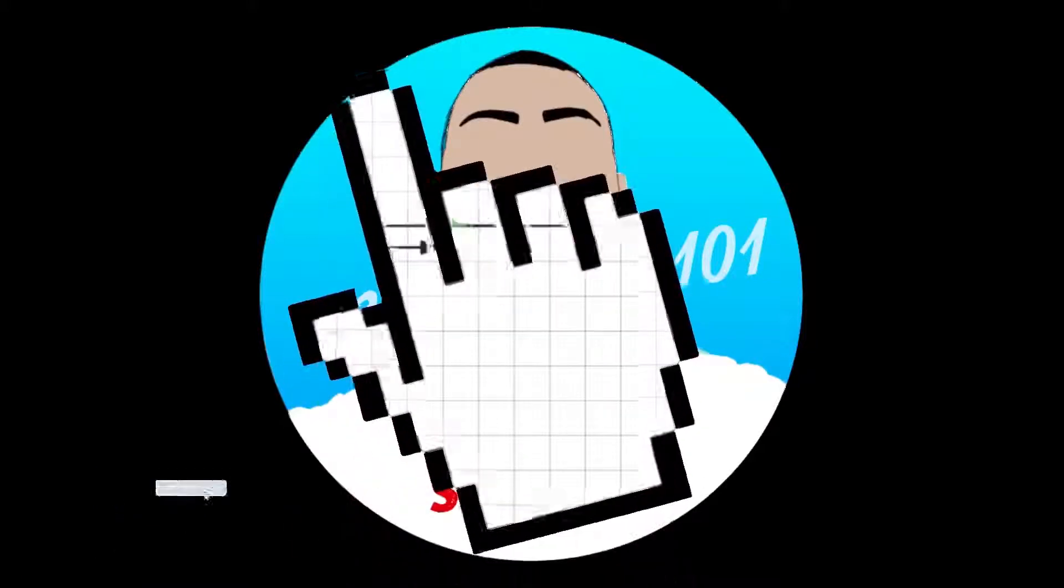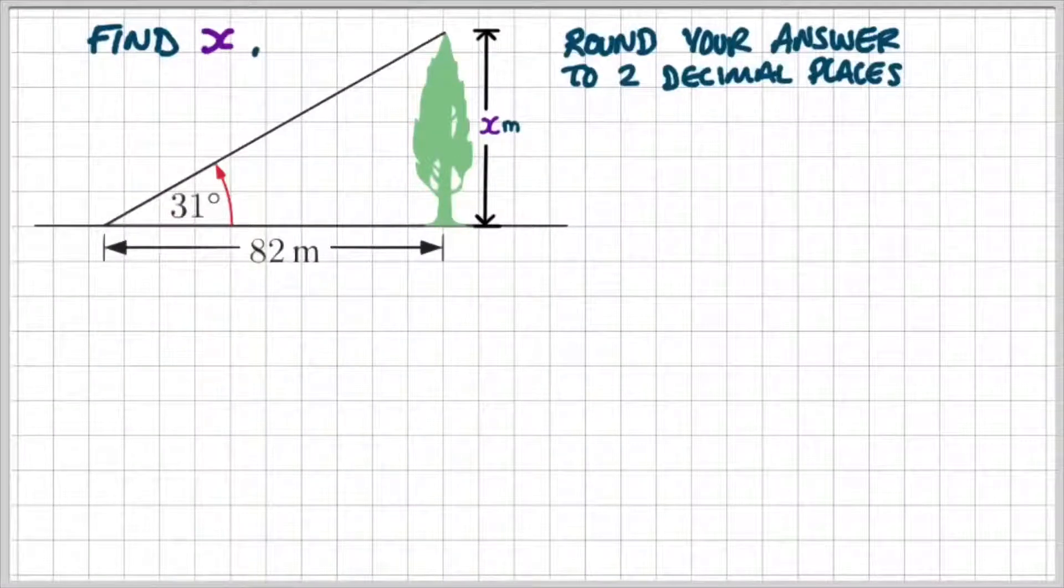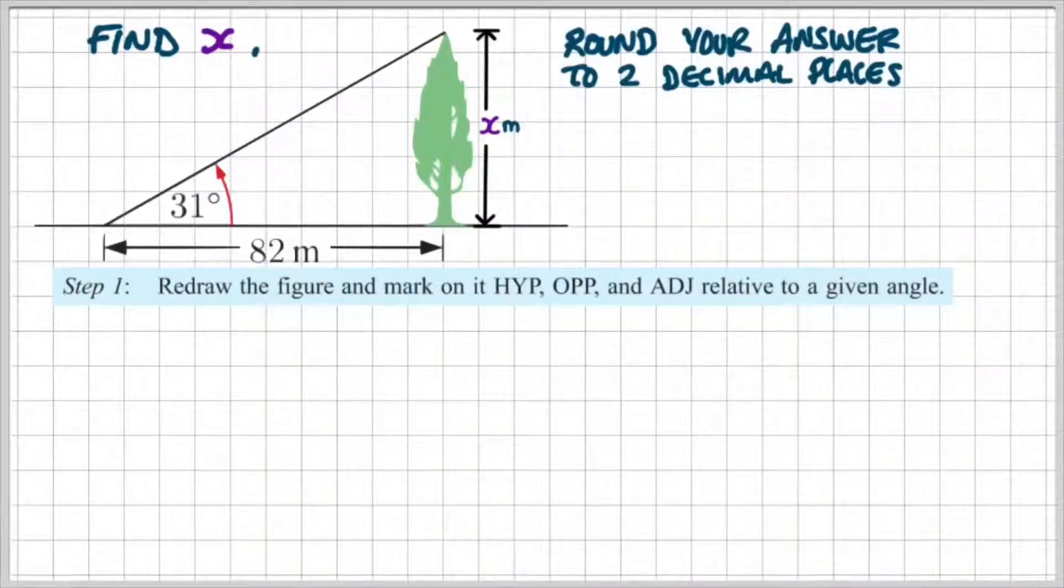Let's do another example. We're going to find X and round our answers to two decimal places. So X is the height of the tree. We know that we have a distance from the tree, which is 82 meters, and we have an angle of elevation of 31 degrees. Step one, we're going to redraw the figure and mark the hypotenuse, opposite and adjacent relative to the given angle.